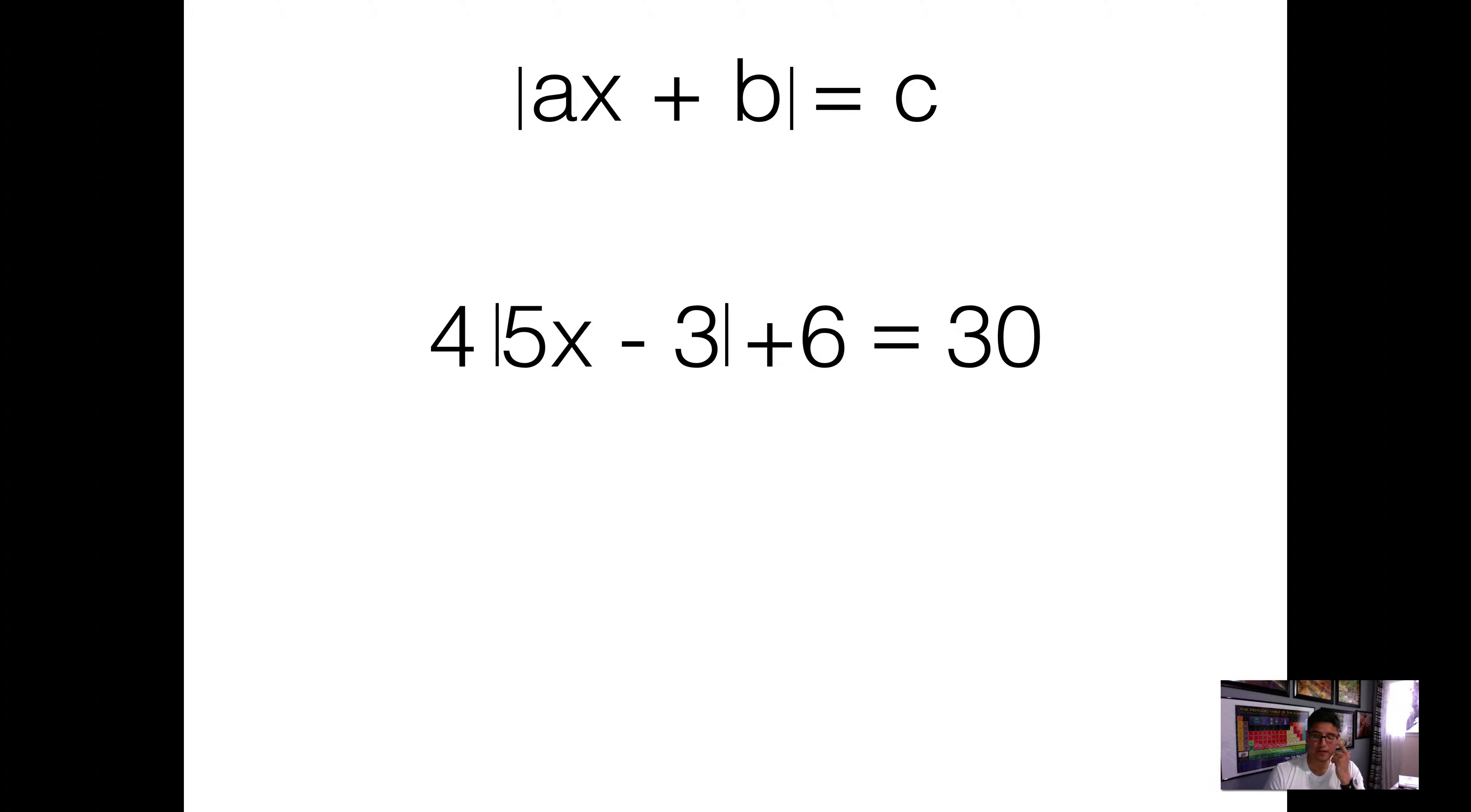Here we have an equation: 4 times the absolute value of 5x minus 3 plus 6 equals 30. You'll notice that we have additional terms, operations that are attached to my absolute value. I have it times 4 and then a plus 6.